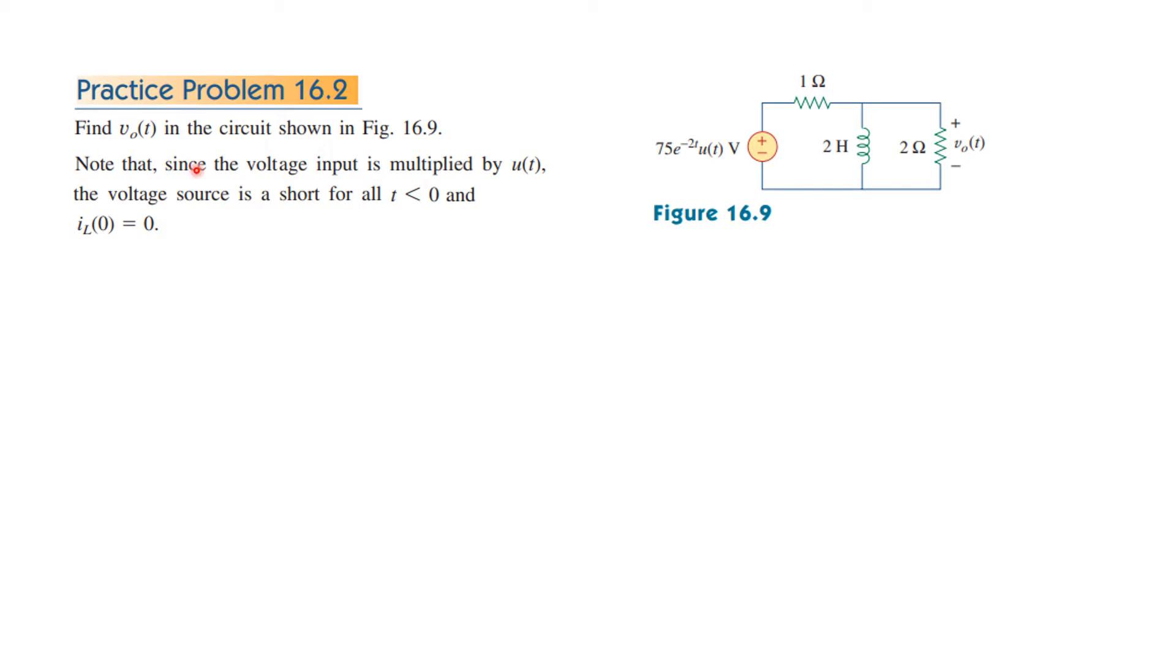Note that since the voltage input is multiplied by UT, now this has been multiplied by UT and I hope you know what is UT. It is unit step function. Its value is 0 for T less than 0 and its value is 1 for T greater than 0. So for T less than 0, its value will be 0 and therefore the current through the inductor will also be 0.